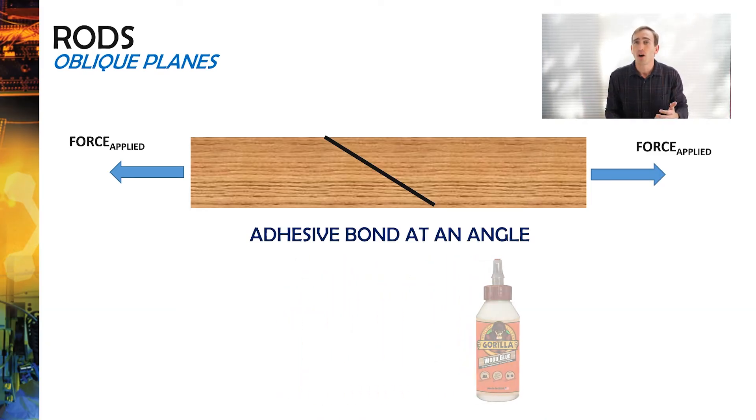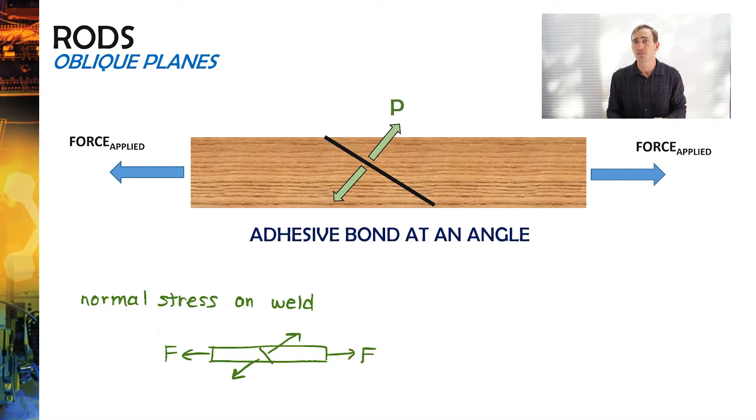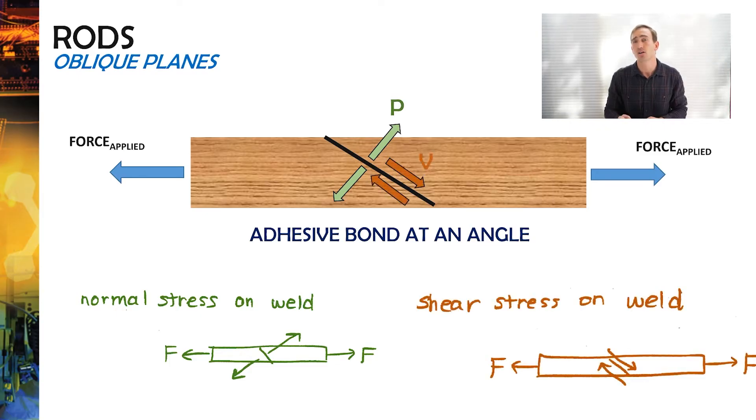So now that we've got a weld, we're essentially introducing more ways that the system can fail. The system can now, instead of just being pulled apart normally, can now be pulled apart relative to the weld and have normal stress, and it can also experience shear stress along the weld where the two junctions will slide apart.